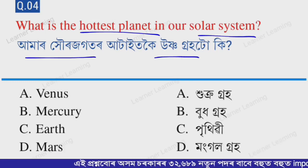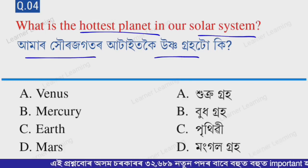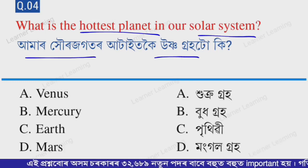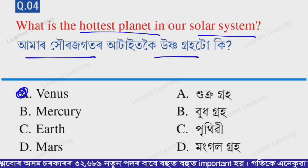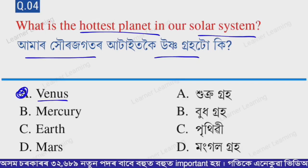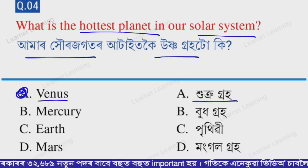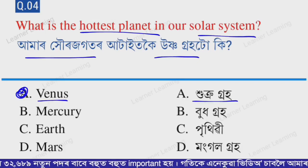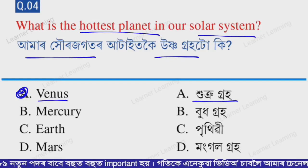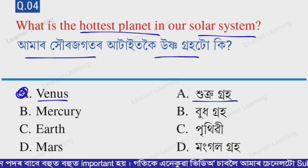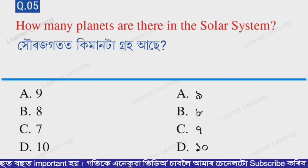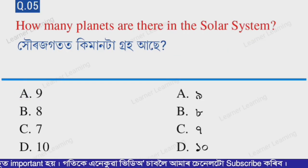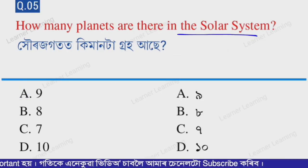Next question: What is the hottest planet in our solar system? Select from the options. Option A — Venus. Venus (Shukro graho) is the hottest planet in our solar system.